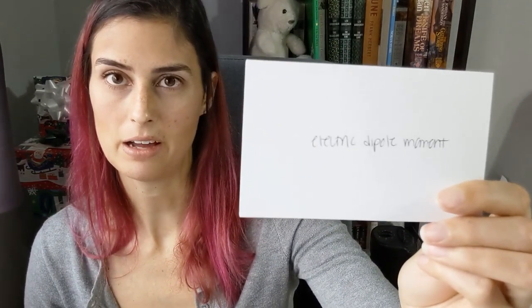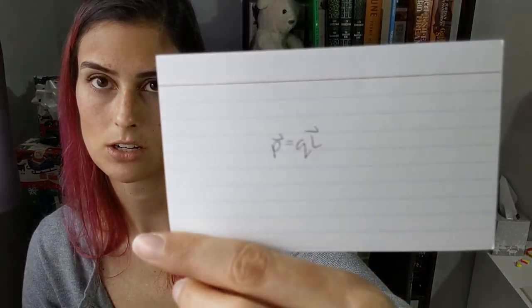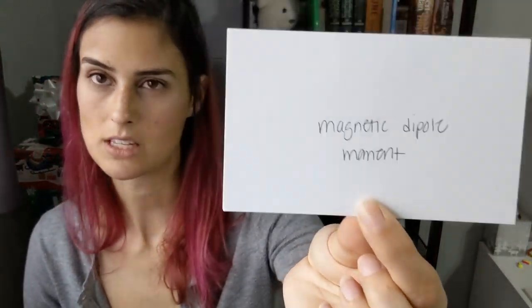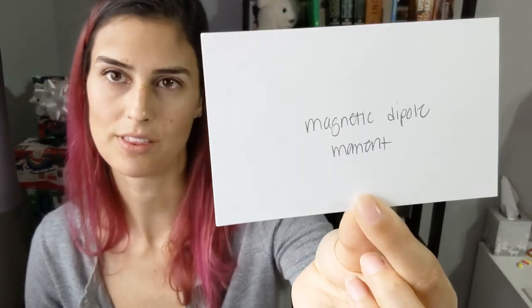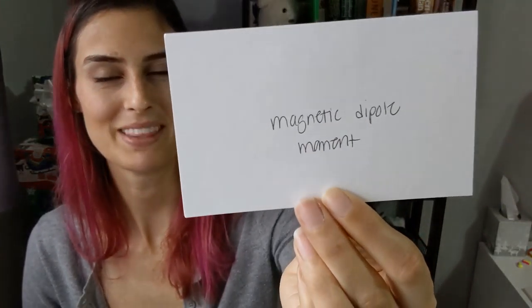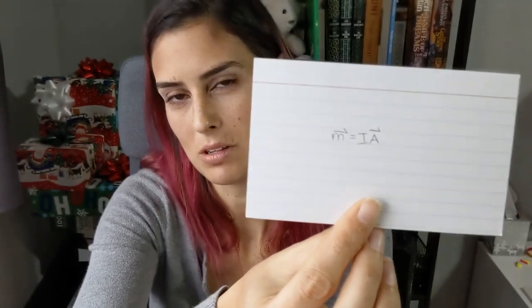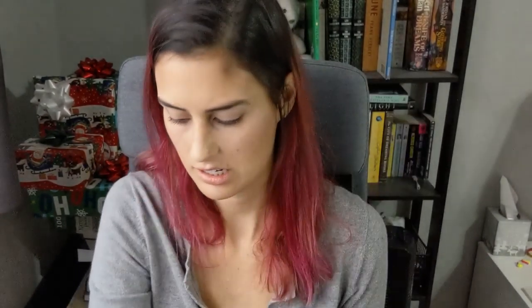The electric dipole moment: p equals Q times l, where l is a vector. The magnetic dipole moment — written as m with a vector arrow, so you can tell it's not mass since mass is not a vector — equals I times A as a vector, where the vectorial component is perpendicular to the area.